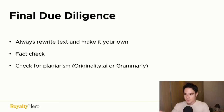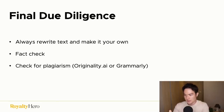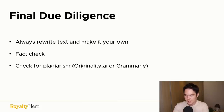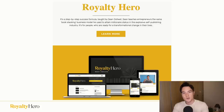That brings us to the final due diligence process: always rewrite text and make it your own, always fact-check what is generated by ChatGPT, and check for plagiarism using originality.ai or Grammarly. That is it for the video. Thank you so much for watching. Hope you got a lot of value from this on how to use ChatGPT to help you with the entire publishing process.